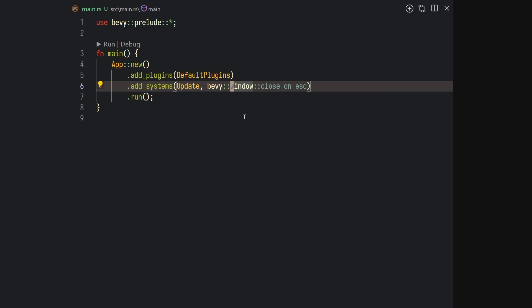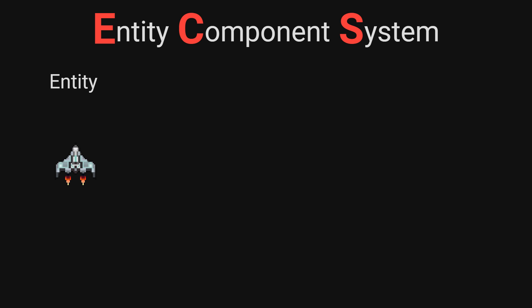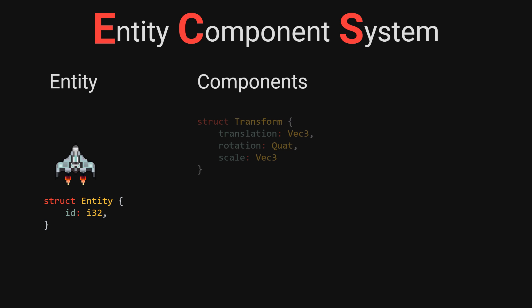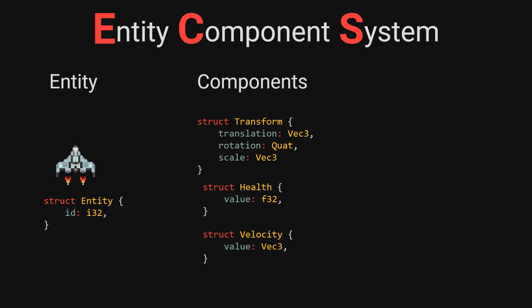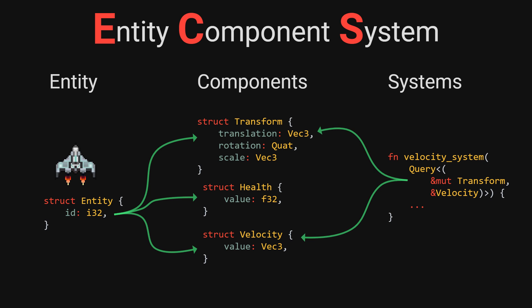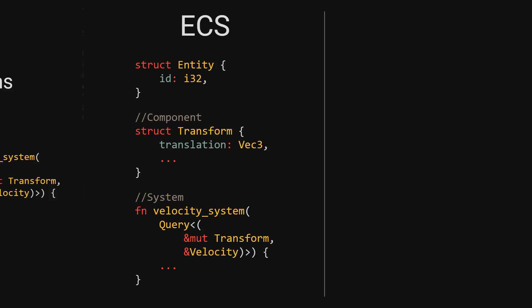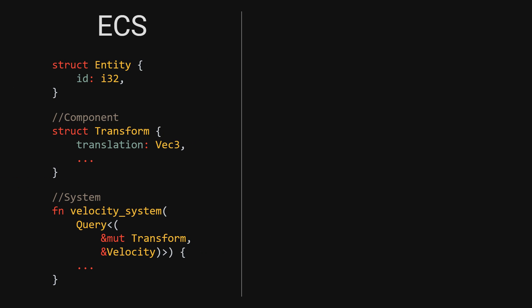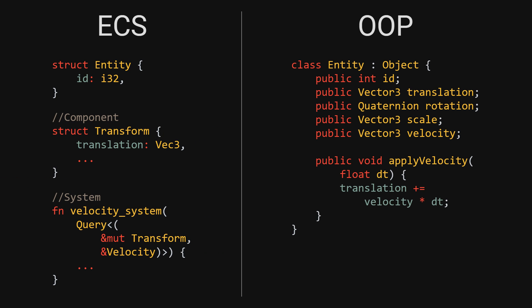Let's now create our player. In Bevy, we use an entity component system architecture. This means that any object in the game — such as the player, the ball, the brick — is represented by an entity, which is really just an ID tied to a group of components. The components themselves are just data for this entity, things like position, rotation, scale, health, and really any data that makes sense for your game. The systems are the code that operate on those components to create game behavior, such as a character controller.